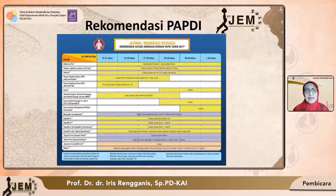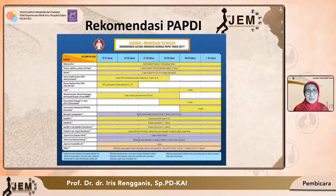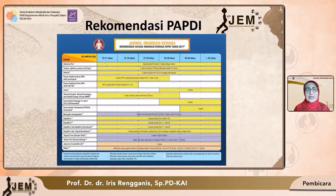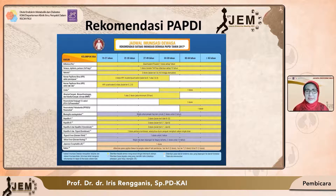Ini adalah rekomendasi dari PAPDI. Dewasa dimulai usia 19 tahun karena anak adalah 0 sampai 18 tahun, di mana tulang epifisnya sudah menutup dan pertumbuhan berhenti. Untuk influenza kita mulai 19 tahun sampai seterusnya, tidak ada batasan umur, dan diberikan hanya setahun sekali dengan satu dosis. Kalau tidak tersedia kuadrivalen, diberikan trivalen. Tapi kalau tersedia kuadrivalen, kita lebih memilih kuadrivalen supaya perlindungannya lebih luas — diberikan setahun sekali sesuai dengan strain virus yang beredar.